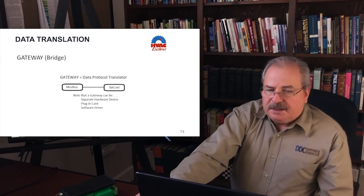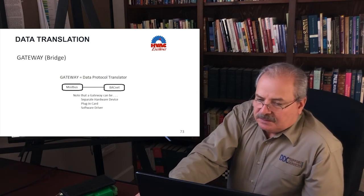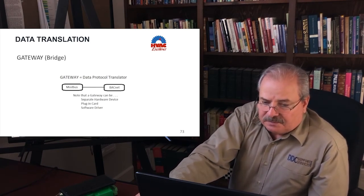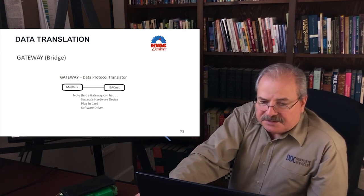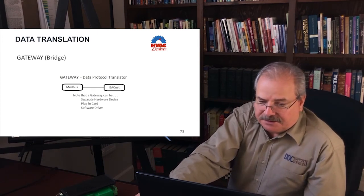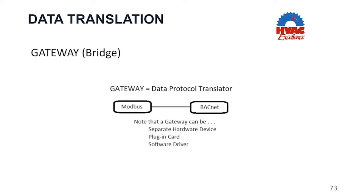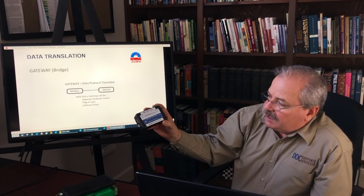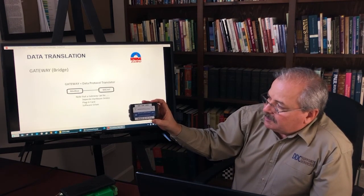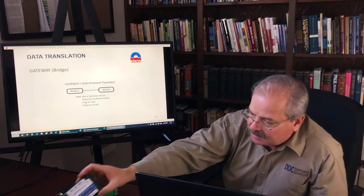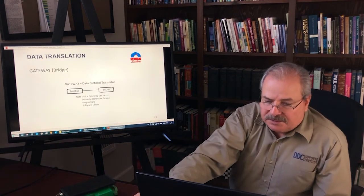Let's talk about gateway devices or bridges. When you look at data protocols, you have to look at translation. Just as two people speaking different languages need a translator, gateway devices allow separate languages like Modbus and BACnet to talk together. A gateway can be a hardware device — here's an example of a gateway that takes BACnet MSTP and converts it to BACnet IP, the same language but two different transmission protocols. You can also buy gateways that convert different languages such as Modbus and BACnet.